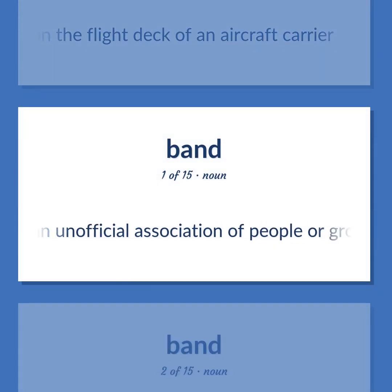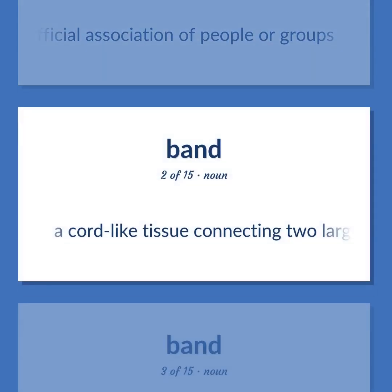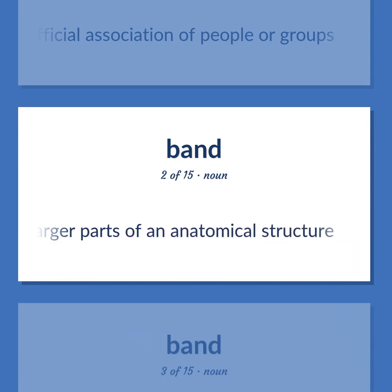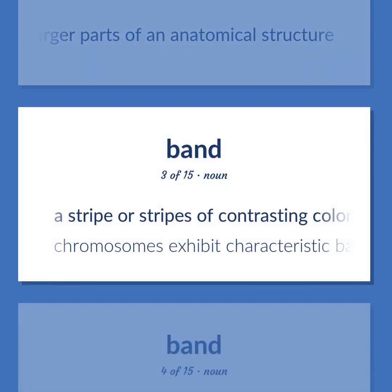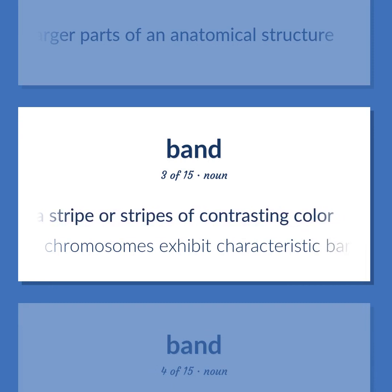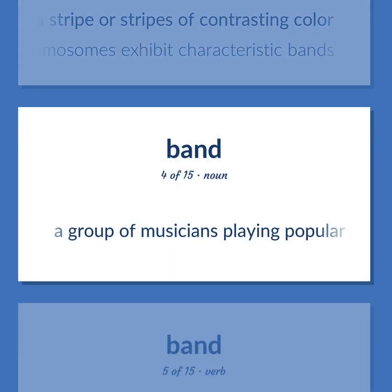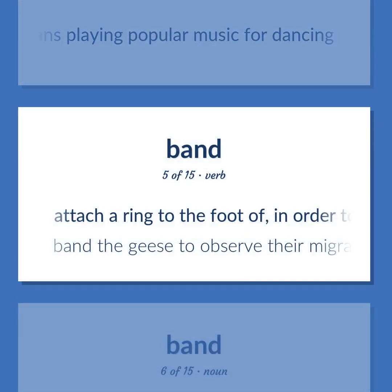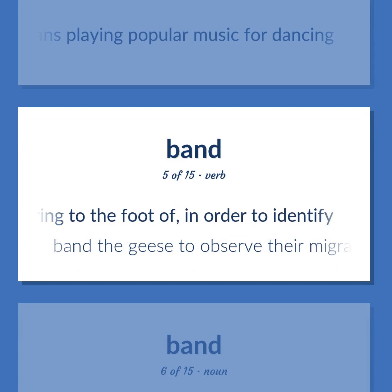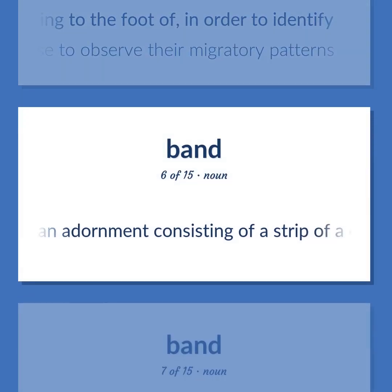Band: An unofficial association of people or groups. A cord-like tissue connecting two larger parts of an anatomical structure. A stripe or stripes of contrasting color — chromosomes exhibit characteristic bands. A group of musicians playing popular music for dancing. Attach a ring to the foot of, in order to identify — band the geese to observe their migratory patterns.